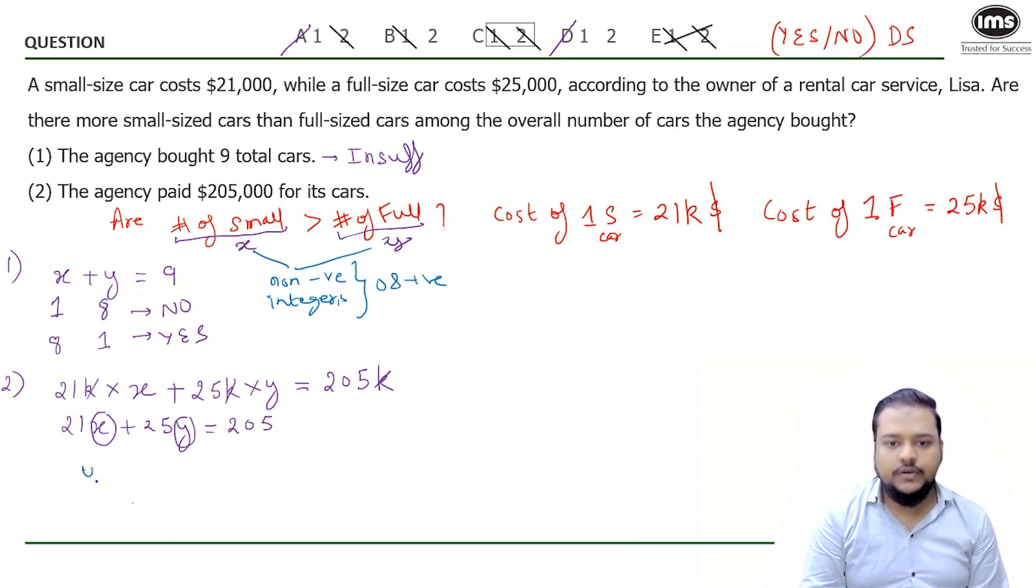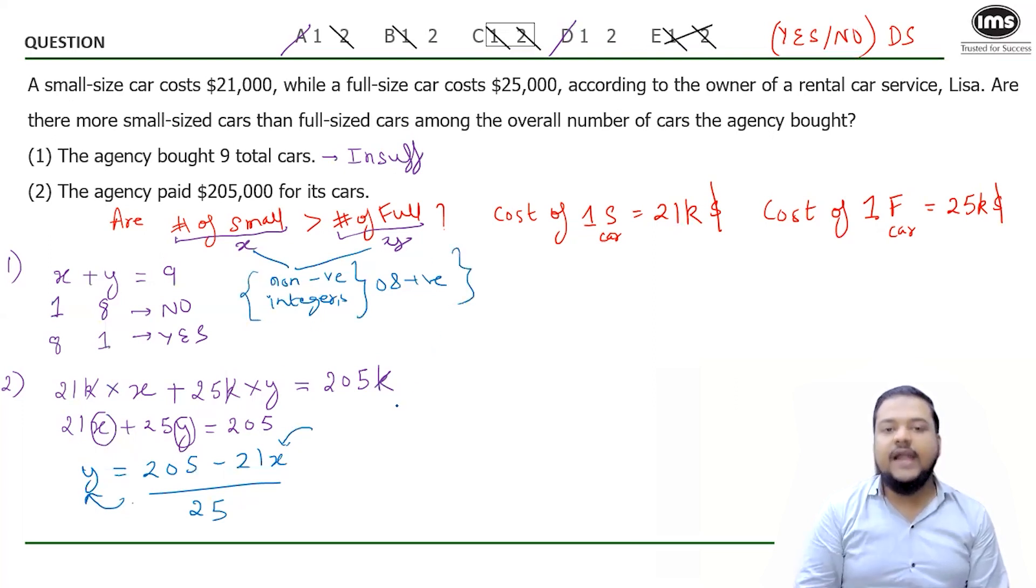Hit and trial, what I can do in a simpler way is I can just write this equation in this manner. Watch out here. So Y equals 205 minus 21X divide by 25. Now hit and trial means that you put values of X and check the value of Y. If it is satisfying what we already have deduced, then that solution will be acceptable. I will show you a part of it.